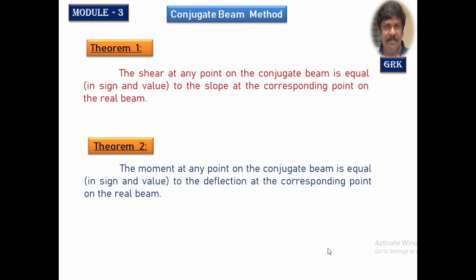The second theorem is about finding out the deflection at any point of the real beam by taking the moment of the M/EI diagram loading on the conjugate beam. To know the deflection, we need to calculate the bending moment at that section in the conjugate beam. So, the first theorem gives slope from shear force, and the second theorem gives deflection from the bending moment at that section.